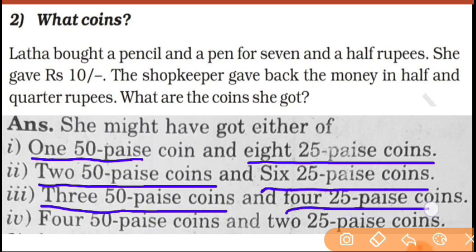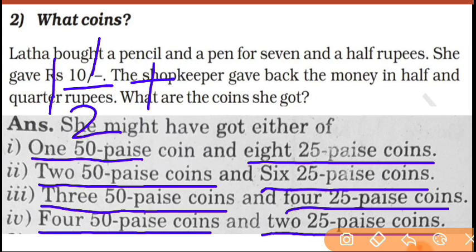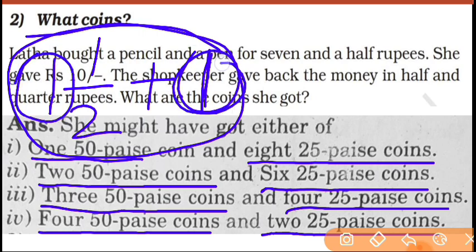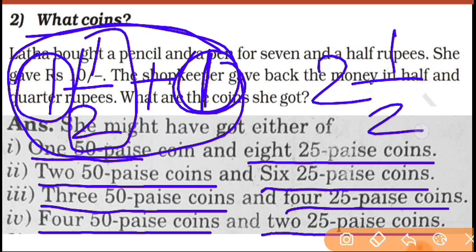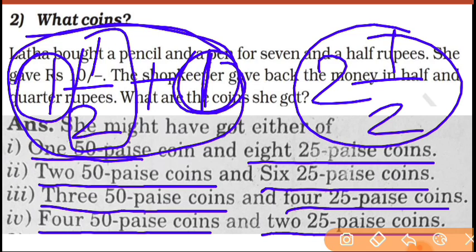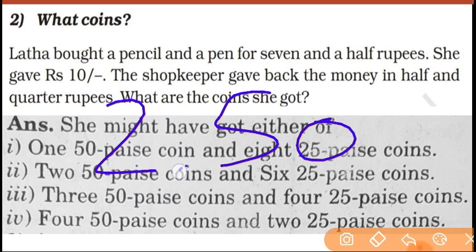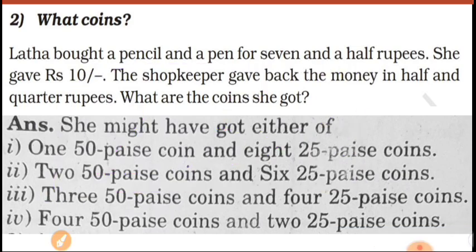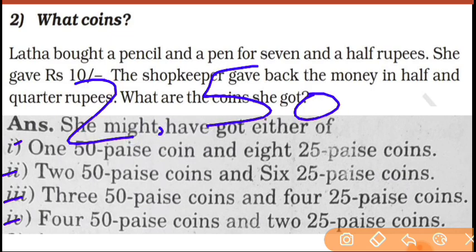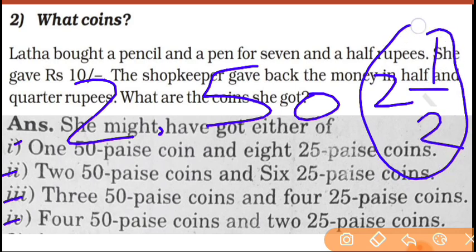All the different combinations of half and quarter rupee coins can be found. For example: 3 half-rupee coins and 4 quarter-rupee coins, or 4 half-rupee coins and 2 quarter-rupee coins. Every time the combination must add up to 2 and a half rupees. All answers are correct as long as they total 2.50 rupees.